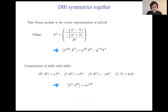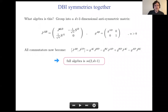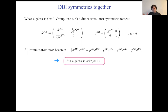We can identify the full group by grouping the conformals and the shifts together into a D+3 dimensional anti-symmetric matrix and defining a D+3 dimensional metric. All commutators take the SO form, so the full algebra is SO(2, D+1) — the conformal algebra of one higher dimension.